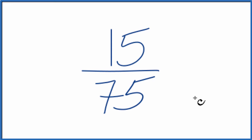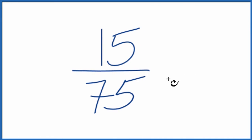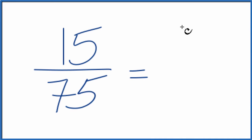To do that, we need to find a common multiple of both 15 and 75. So let's divide the top and bottom by 15. 15 divided by 15 is 1, and 75 divided by 15 is 5.